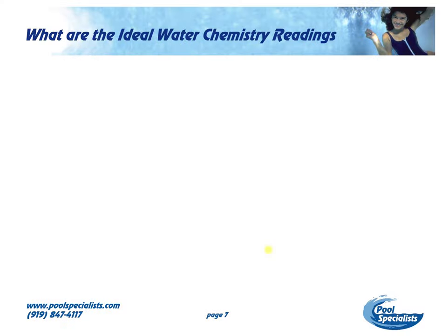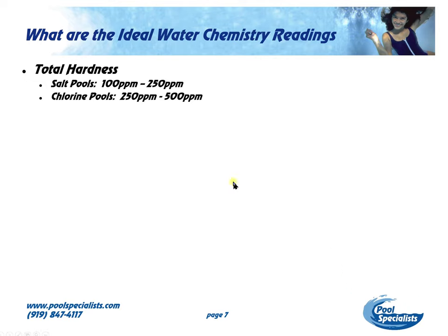What are the ideal water chemistry readings? Total hardness is different for a salt pool than for a chlorine pool. In a salt pool, it should be between 100 and 250 parts per million — as you add salt, that's going to add a certain amount of hardness and TDS to the pool. A regular chlorine pool should be between 250 and 500 parts per million, and the reality is you could probably go close to 1,000 parts per million before it's going to start causing issues.